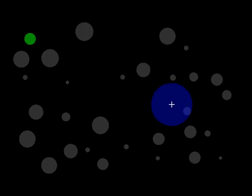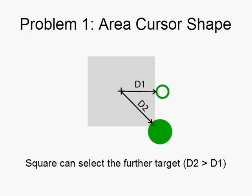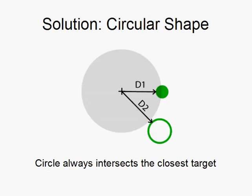There are two main problems in standard area cursors which we address in the design of the bubble cursor. Area cursors are generally square or rectangular, which means a target that is further away from the cursor location can be selected before a target which is closer. We use a circular area cursor so that the closest target will always be selected first.